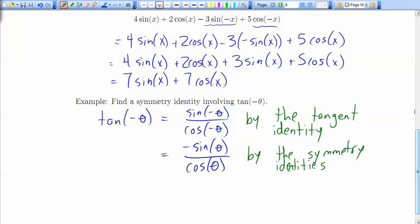And negative sine theta over cos theta, well, that's negative tan theta. So we see that the tangent function is an odd function. And again, that last step, we're just using the tangent identity again, but in reverse.